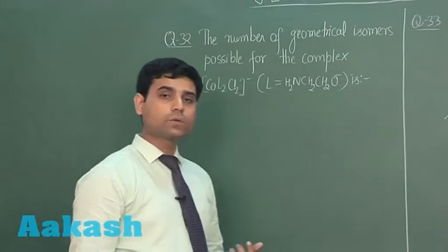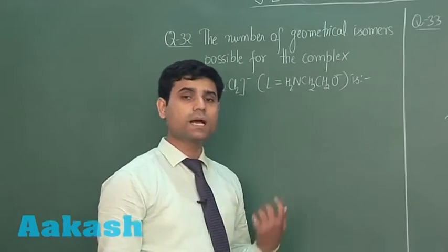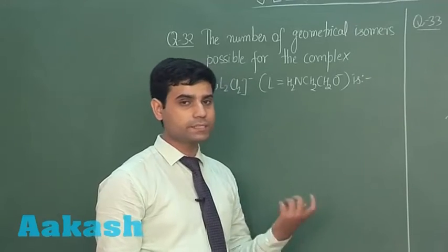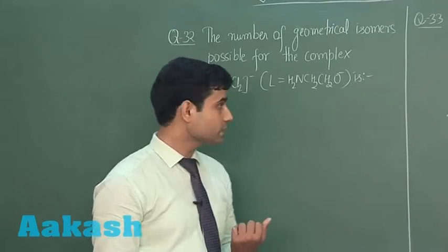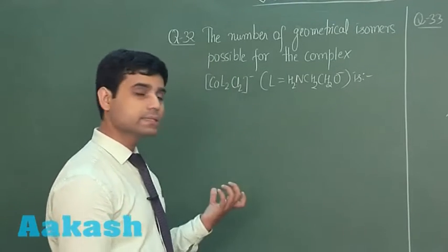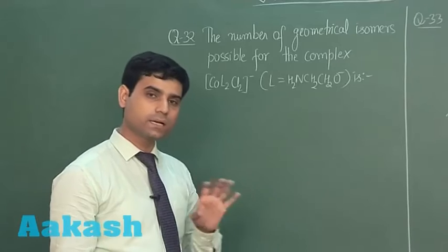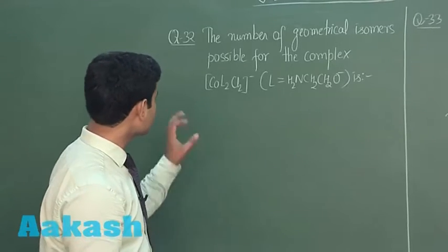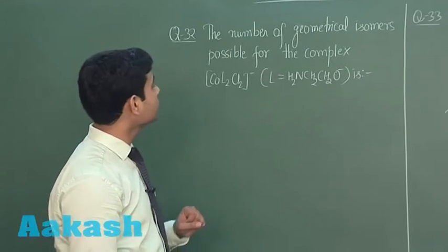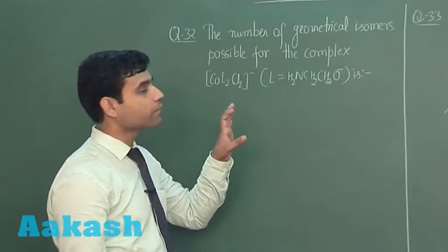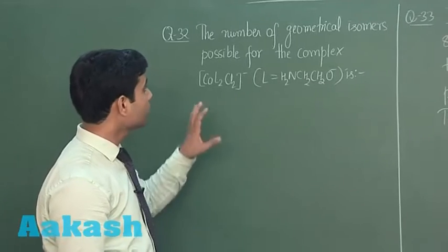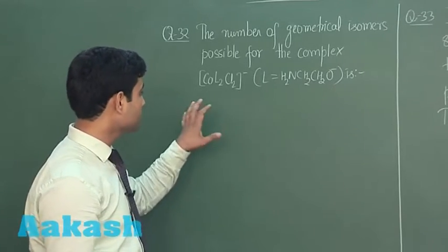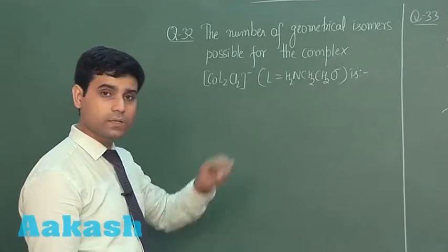Question number 32 onwards are single digit integer type questions; their answers are from 0 to 9. Question number 32 asks: what is the number of geometrical isomers possible for the complex Co(L₂)₂Cl₂?